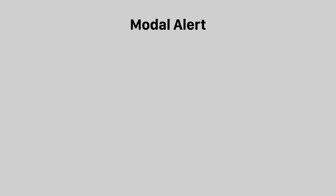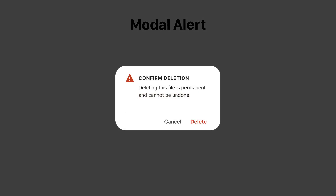Not every button performs its action immediately. Some need a confirmation before the action goes through. For example, deleting a file is an action that needs a confirmation in case users click the button on accident. A modal alert would appear over the screen as a transparent overlay with a message explaining the consequence of deletion.